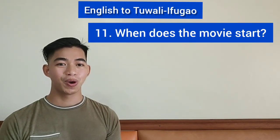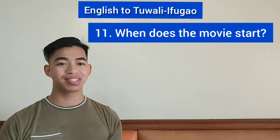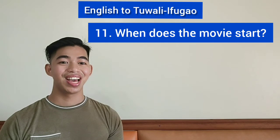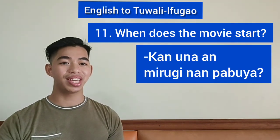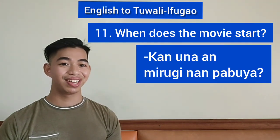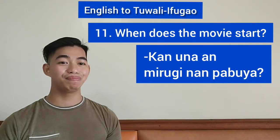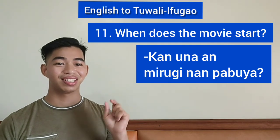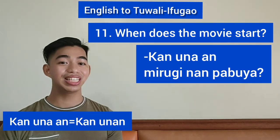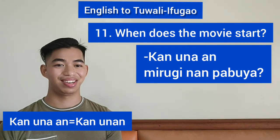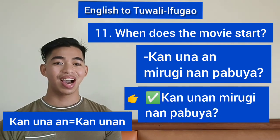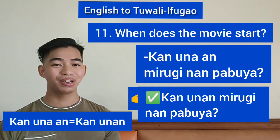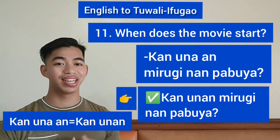Question eleven: When does the movie start? In Ifugao: 'an una an mirugi nan pabuya'. You can contract 'an una' into 'an unan', so: 'an unan mirugi nan pabuya'.